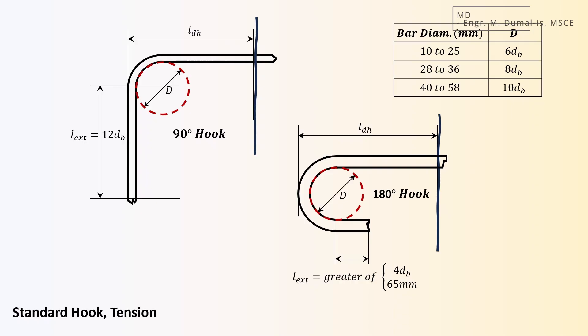The total length for the rebar is made up of the hook development length, Ldh, the bend length defined by the diameter d, and the extension length. The value of d is the same for both angles, 6, 8, and 10 times db for increasing bar diameters, while for the extension, we use 12 times db for 90 degree, and the greater value between 4 times db or 65 mm for 180 degree hook.